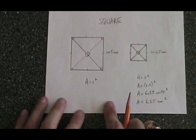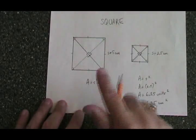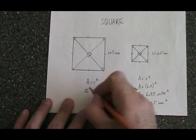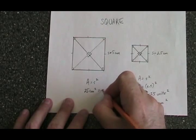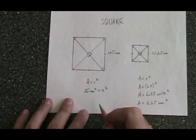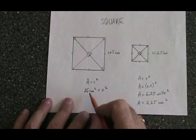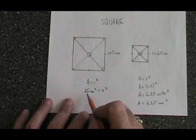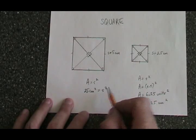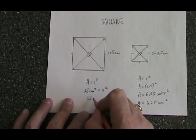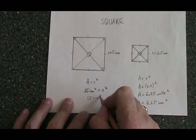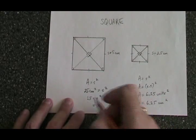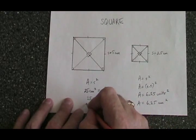What if we know that the area of this square over here is equal to 25 centimeters squared? We can plug that number in, in place of the A in the formula, and we end up with 25 equals s squared. If we square root both sides, we learn that s is equal to 5.